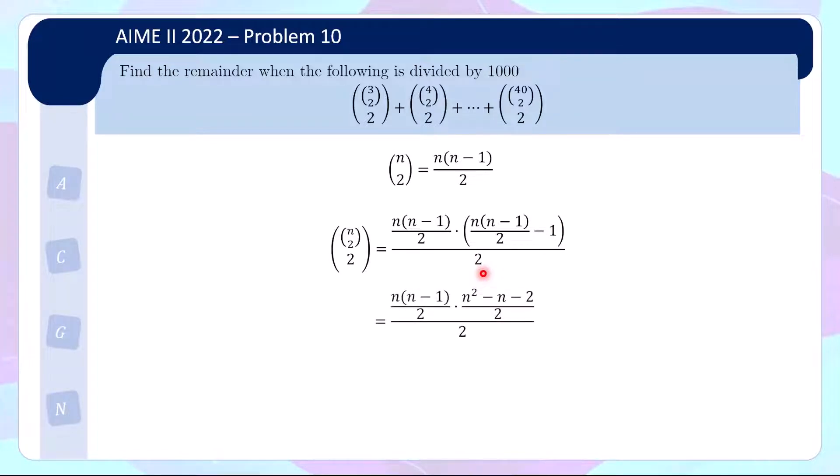So over here, I just combined this into one fraction. So this is n squared minus n, then minus 2 again, so I have this. And so what I did is I collected the 2 into the bottom as an 8. And then for n squared minus n minus 2, I realised that it can be factorised. And this factorised as n minus 2 times n plus 1.